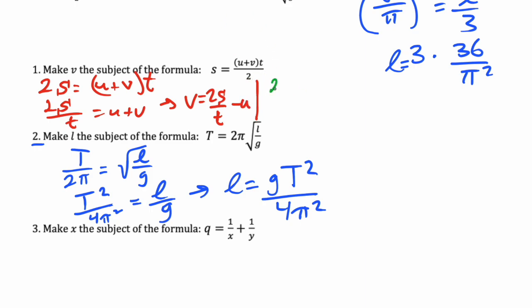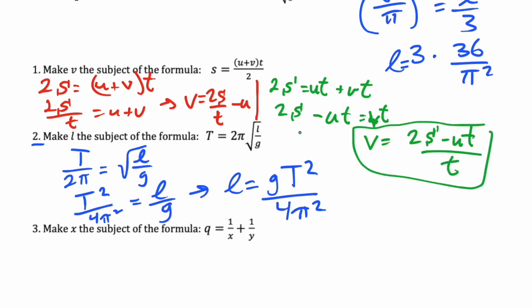Another way to do it is expand the brackets: ut plus vt. Then to solve for v we do 2s minus ut equals vt, so v equals, we divide by t, and we get 2s minus ut over t.